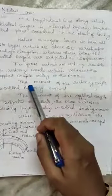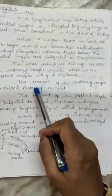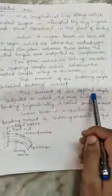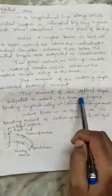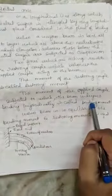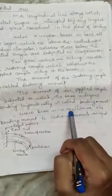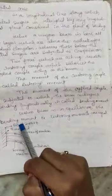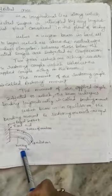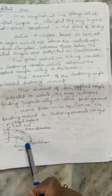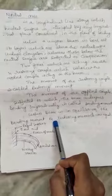The two forces acting on the beam result in a restoring couple that balances the applied couple. The moment of the restoring couple is called the restoring moment, and the moment of the applied couple — which causes the beam to bend longitudinally — is called the bending moment. When the beam is in equilibrium, the bending moment and restoring moment are equal. The forces of reaction are shown in the diagram along the neutral axis.